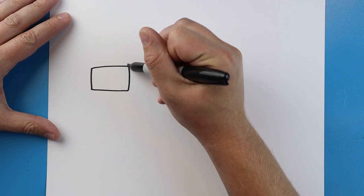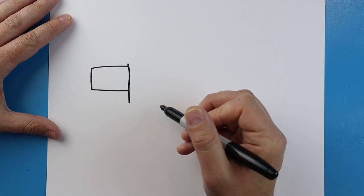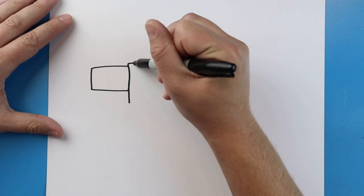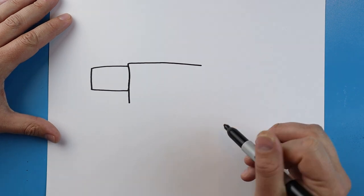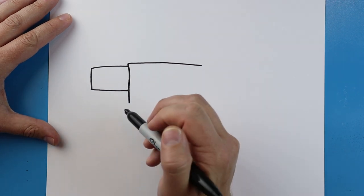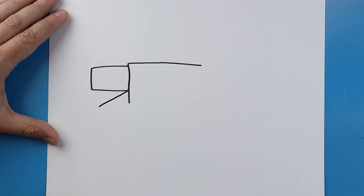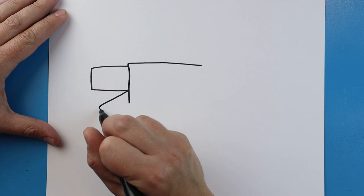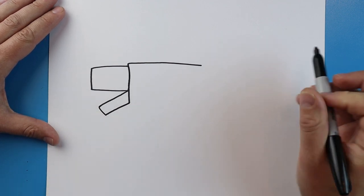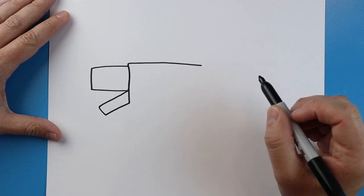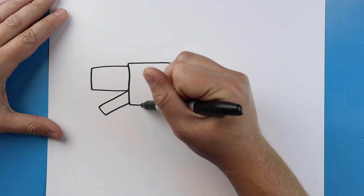Now starting right up here, we're going to draw a line that comes down. Then I'm going to draw a line that comes back here. Starting here, we're going to draw a line that goes down at an angle. It's going to come down again and then it's going to go up. Next we're going to make lines going to come over.